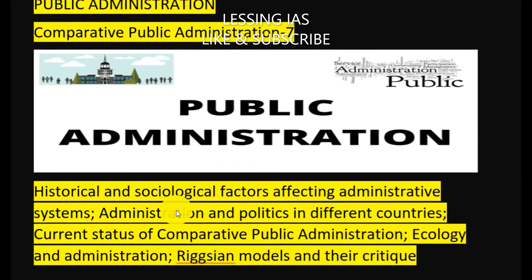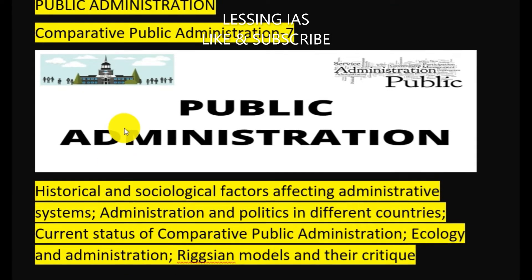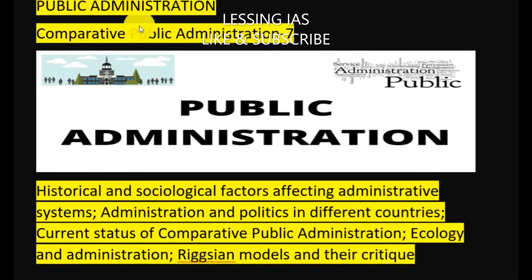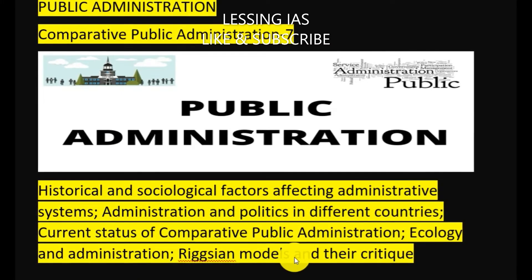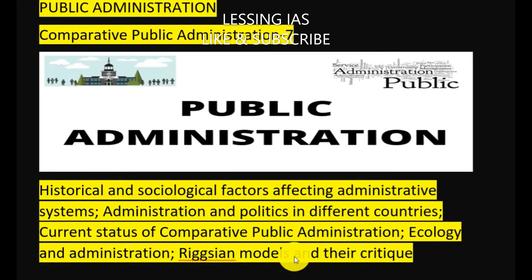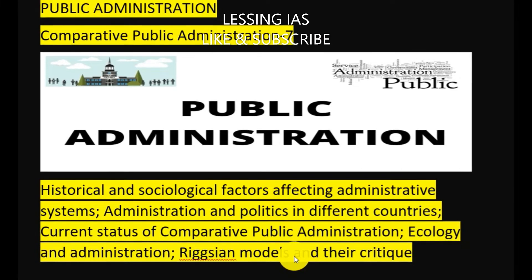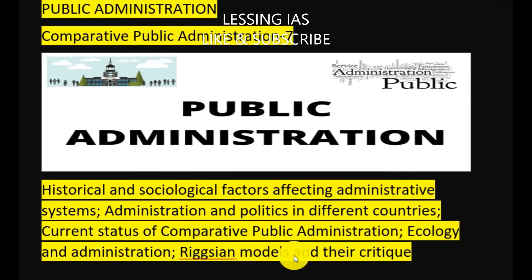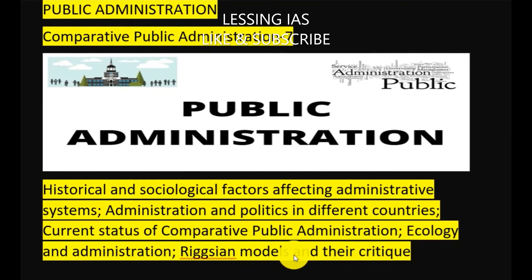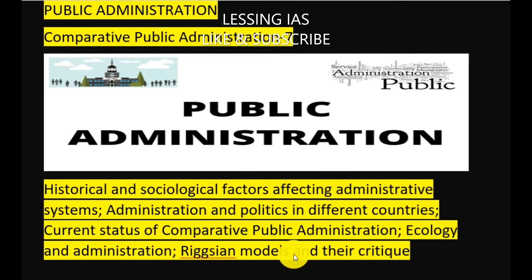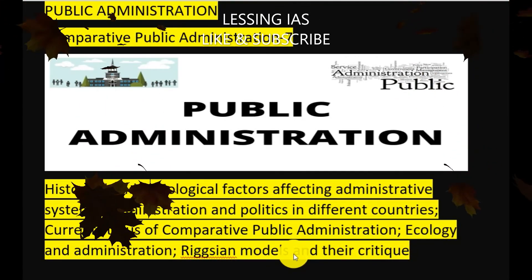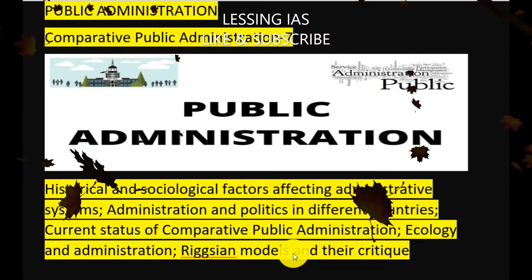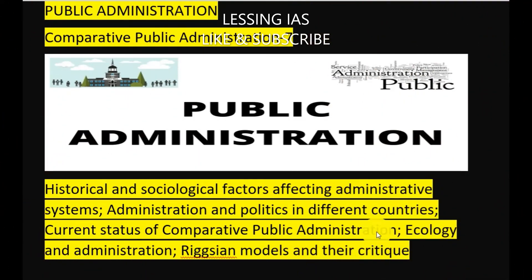The next chapter is comparative public administration, the seventh lesson. Under this, we will cover historical and sociological factors affecting administrative systems, administration and politics in different countries, current status of comparative public administration, ecology and administration, and Riggs' model and its critics.